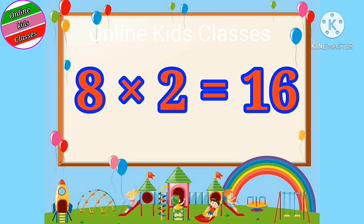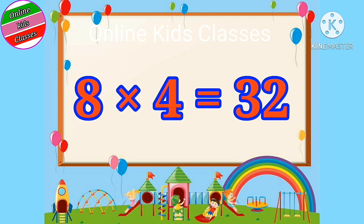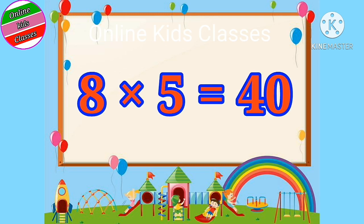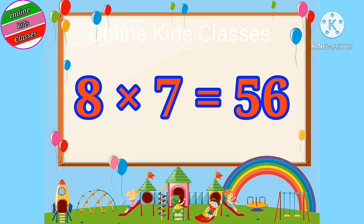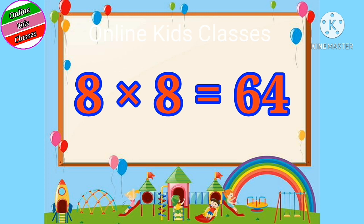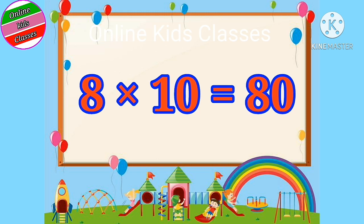Eight ones are eight. Eight twos are sixty-four. Eight threes are twenty-four. Eight fours are thirty-two. Eight fives are forty. Eight sixes are forty-eight. Eight sevens are fifty-six. Eight eights are sixty-four. Eight nines are seventy-two. Eight tens are eighty.